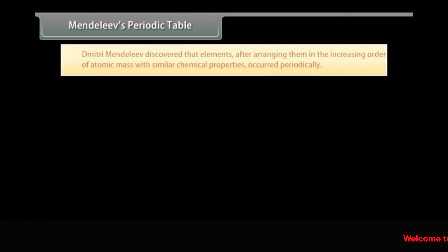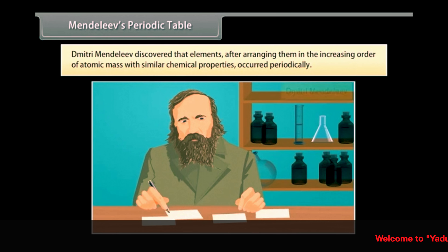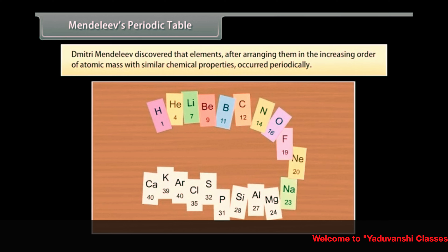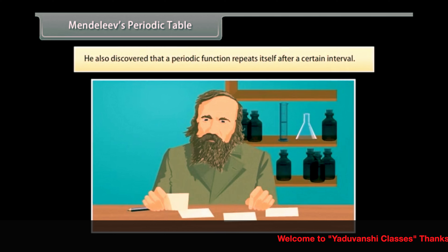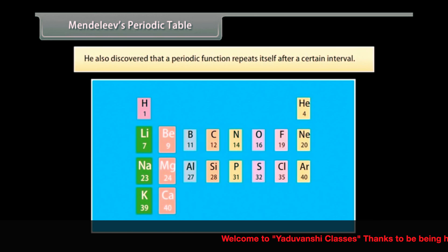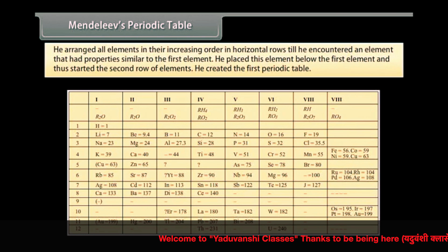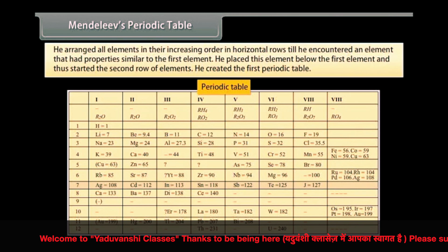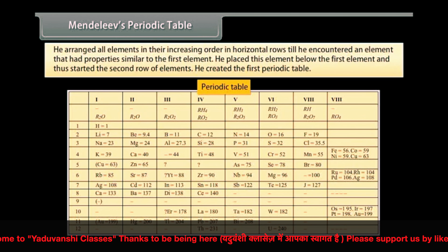Dmitri Mendeleev, a Russian chemist, discovered that elements arranged in increasing order of atomic mass with similar chemical properties occurred periodically. In 1869, he stated this as Mendeleev's Periodic Law. A periodic function repeats itself after a certain interval, so the chemical and physical properties of elements repeat after certain intervals when arranged in increasing order of atomic mass. Mendeleev arranged all elements in horizontal rows until he encountered an element with properties similar to the first, placed it below, and started a new row, creating the first periodic table.